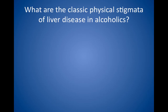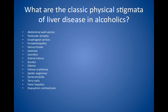What are the classic physical stigmata of liver disease in alcoholics? Abdominal wall varices, or caput medusae, testicular atrophy, esophageal varices, encephalopathy, internal hemorrhoids, asterixis, jaundice, scleral icterus, ascites.